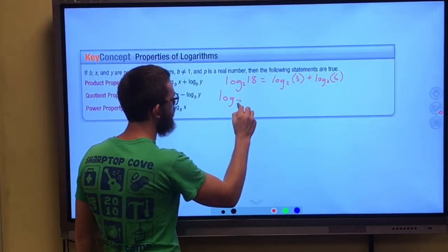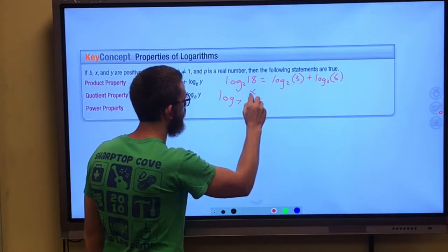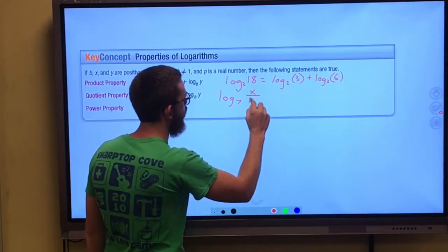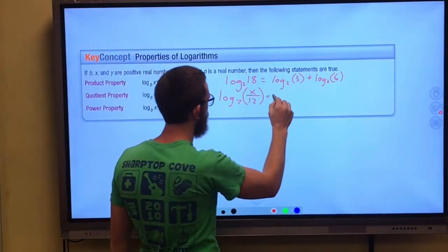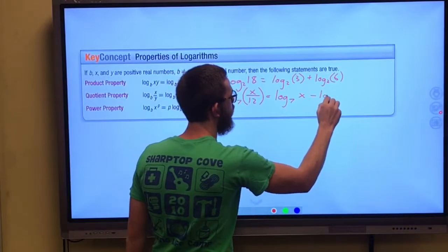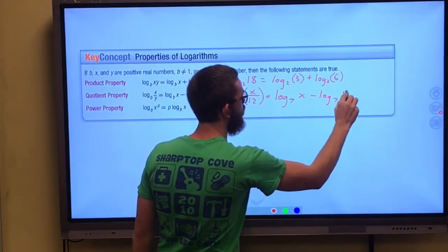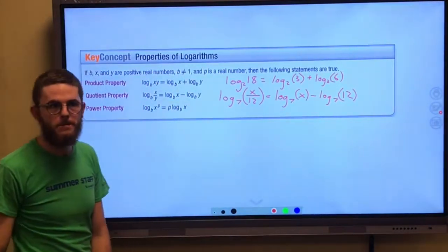So here's an example, maybe log base 7 of x divided by 12. Pick whatever you want. It's going to be log base 7 of the numerator minus log base 7 of the denominator. No biggie.